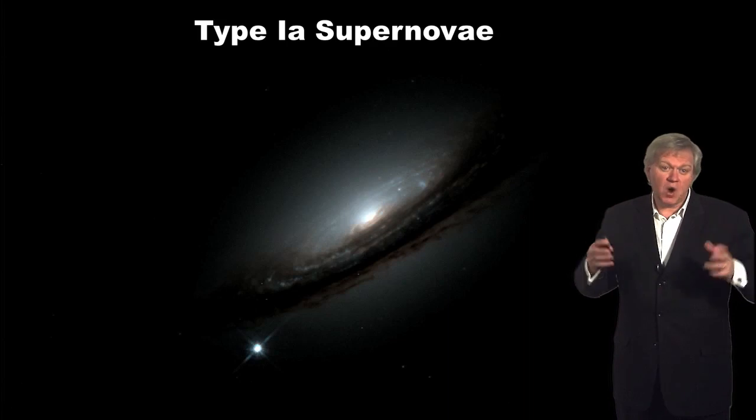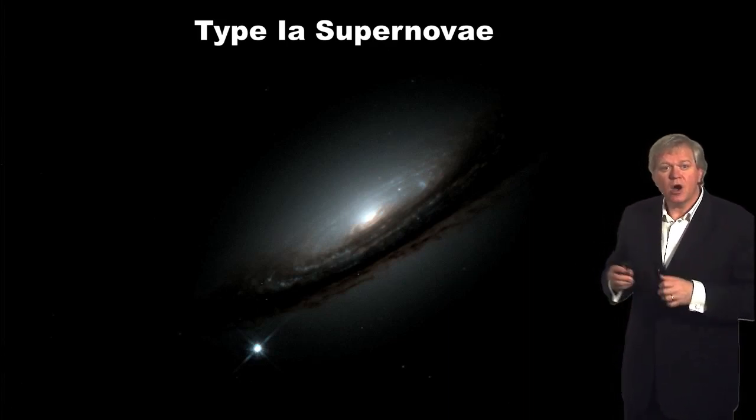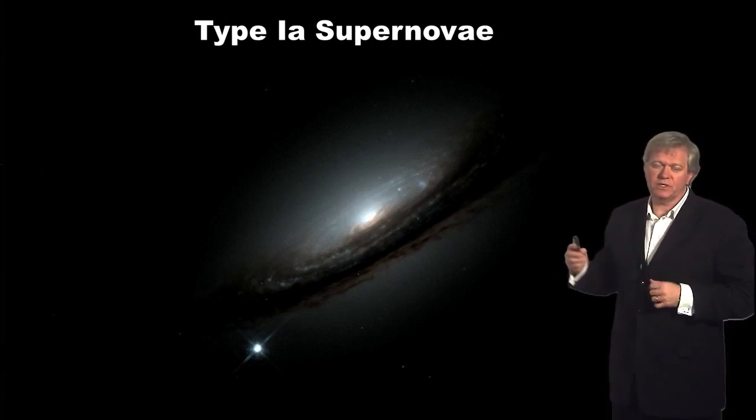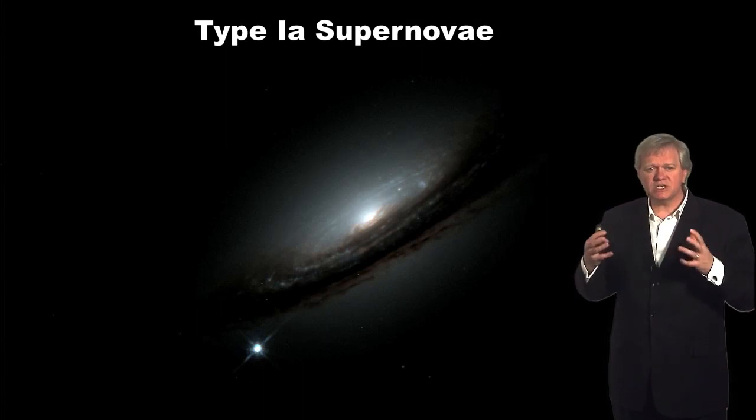To measure the universe, we need to look back in time. But when we look back in time, we're looking far away, which means we're looking to things that are going to appear much fainter than they do nearby. So we need something bright. And the brightest thing that we know of in the nearby universe are type Ia supernovae. These are exploding stars.